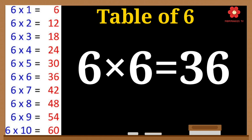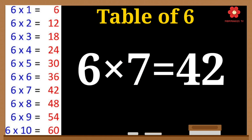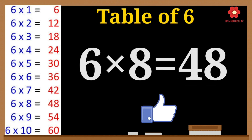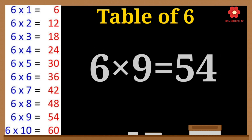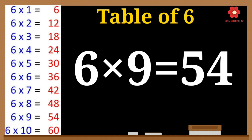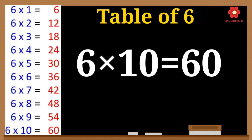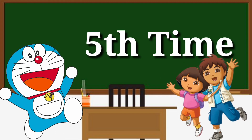6 sixes are 36. 6 sevens are 42. 6 eights are 48. 6 nines are 54. 6 tens are 60.